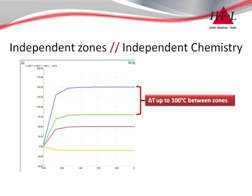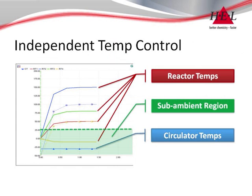The temperature difference between adjacent reactors can be over 100 degrees centigrade, and sub-ambient temperature operations can be achieved with the addition of a chiller, run manually or integrated directly into the WinISO software.